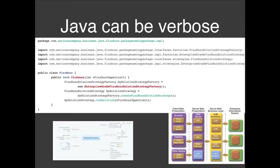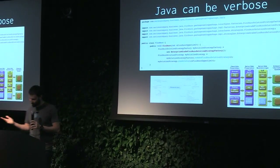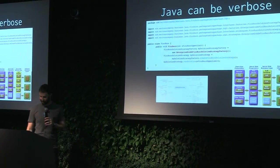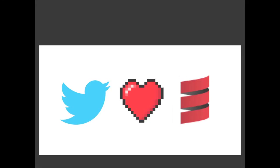Java can be verbose — if you've seen FizzBuzz Enterprise Edition on GitHub, that's a real project and it's a disaster. That's not what you want to be doing. You're at work a long time; you don't want to be coding that way.